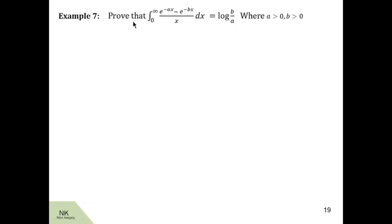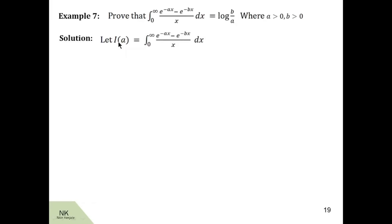Here we are asked to prove the integral of e raised to minus ax minus e raised to minus bx, upon x, dx over the limit zero to infinity is equal to log of b by a, where a and b are both greater than zero. To begin with, we first note down the parameters involved in this integral. Here we see the parameters are a and b. So we take only one of these parameters into consideration and we label this integral as i of a. We call this equation number one.